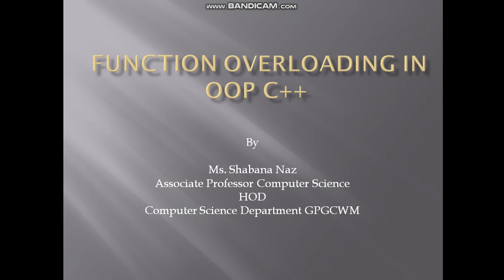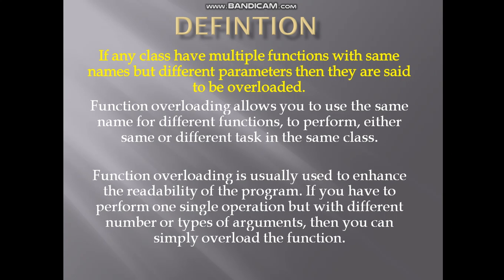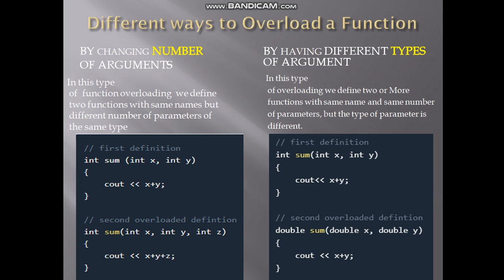Today our topic of discussion is function overloading in object-oriented programming. If any class has multiple functions with the same names but different parameters or arguments, they are said to be overloaded functions. Function overloading allows you to use the same name for different functions to perform either same or different tasks in the same class. It is usually used to enhance the readability of the program. If you have to perform one single operation but with a different number or types of arguments, you can simply overload the function.